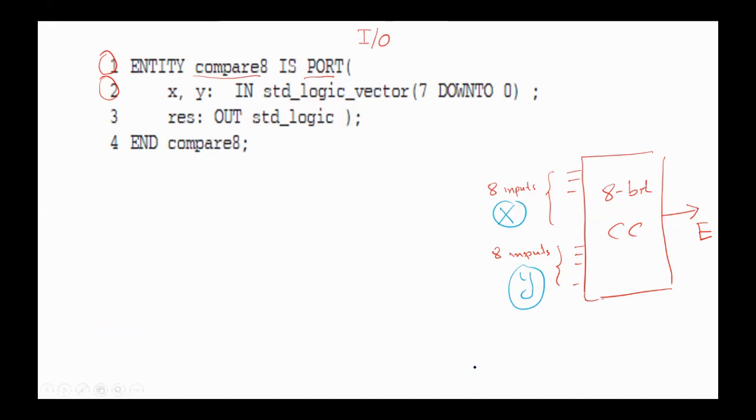In our example we are using X and Y as inputs and declaring them to be vectors of 8 bits each, with bit 7 being the most significant bit and bit 0 the least significant bit.